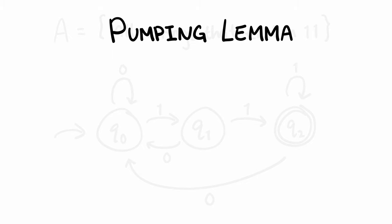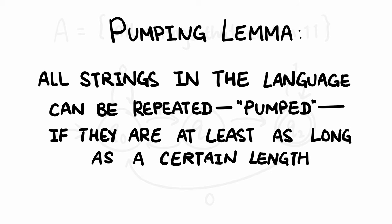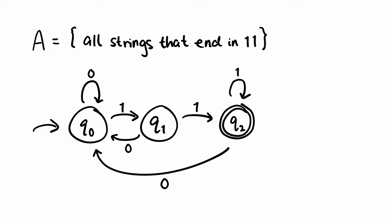The pumping lemma states that all strings in the language can be repeated or pumped, if they are at least as long as a certain length, which we call the pumping length. Let's call this pumping length P. For our example, we can assign the pumping length to be the number of states of A's DFA. So P will equal 3.